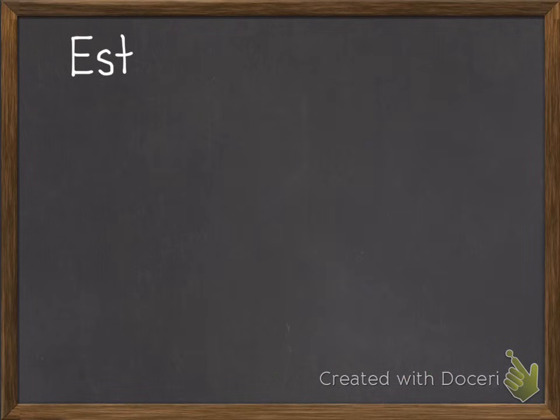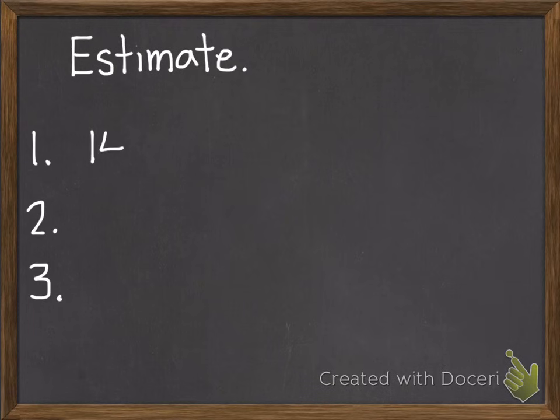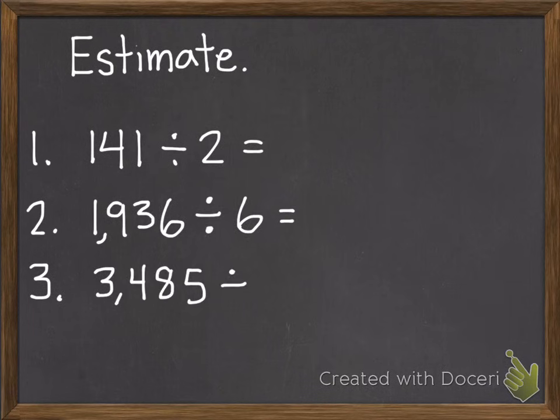Okay. You're ready for three problems that you'll bring to class tomorrow. Number one, 141 divided by 2. Problem two, 1,936 divided by 6. And problem three, 3,485 divided by 9. And you're going to estimate all of those using compatible numbers.